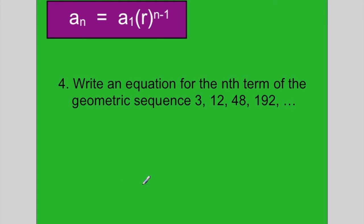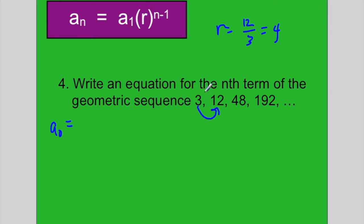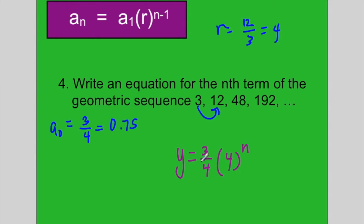Example 4: write an equation for the nth term of the geometric sequence. To go from 3 to 12, divide 12 by 3 to get the ratio of 4. Check: 12 times 4 is 48 — correct. Now find a sub 0: take 3 and divide by 4, giving 0.75 or 3 over 4. So the equation is a sub n equals three-fourths times 4 to the nth.